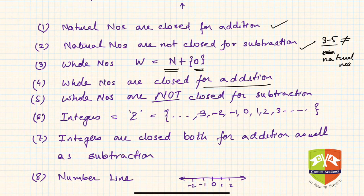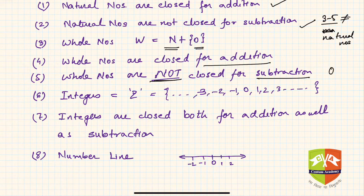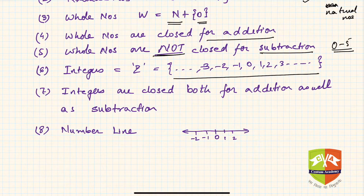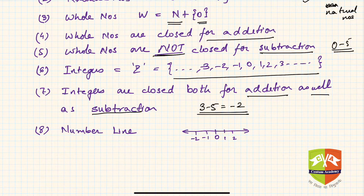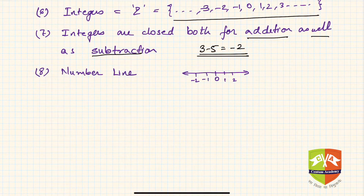Whole numbers are closed for addition, but like natural numbers, whole numbers are also not closed for subtraction. For example, 0 minus 5 is not a whole number. So we invented integers, which is the set of all negative, zero, and positive numbers. Integers are closed for both addition and subtraction — for example, 3 minus 5 equals negative 2, which is also an integer.